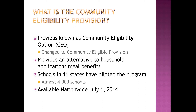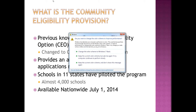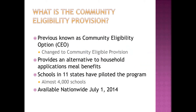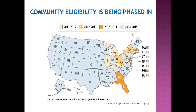Starting July 1, 2014, the community eligibility provision is going to be available nationwide. Here's a quick graphic showing which states piloted it and when. Illinois, Michigan, and Kentucky were some of the first, piloting it in the 2011-12 school year. A few more states were added in 2012-13, a couple more this current school year, and starting with the 2014-15 school year it will be available nationwide.